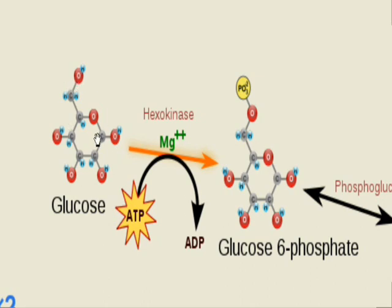Glycolysis is mainly divided into two parts: the investment part and the harvesting part. In the investment part, we are going to invest some energy, and in the harvesting part, we are going to get some energy. So let's first look at the investing part.